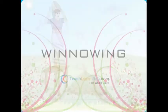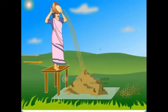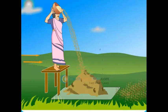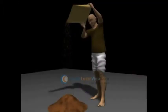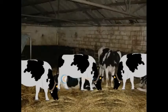Winnowing is the process used to separate heavier and lighter components of a mixture by blowing air. Farmers use this method to separate lighter husk particles from heavier seeds of grain. The separated husk is used as fodder for cattle.